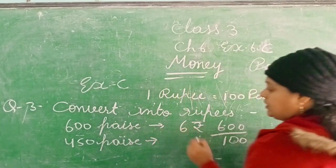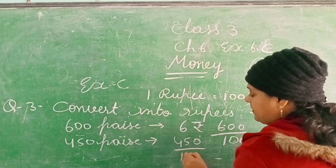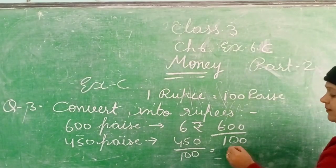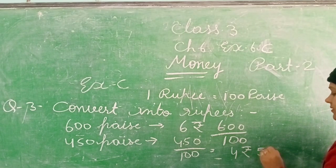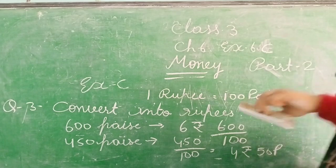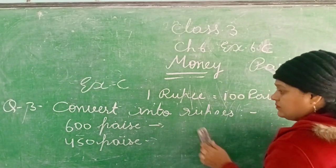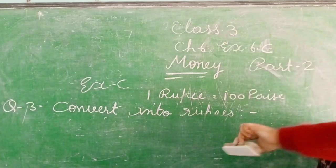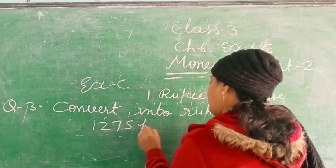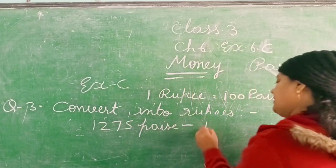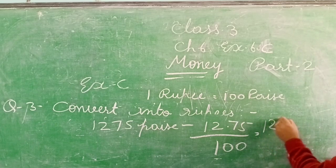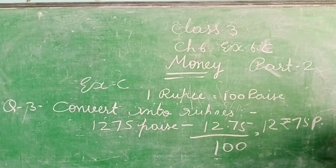Next: 1275 paise. Remove the dot and mark the decimal. Decimal se pehle ka number rupees, baad ka number paise. 1275 paise is equal to 12.75 rupees. Clear?